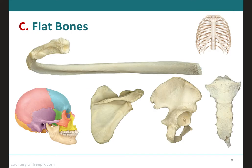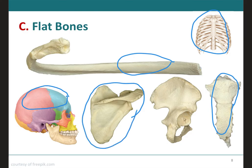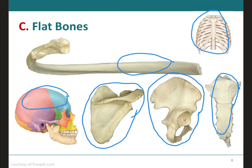Flat bones are generally thin and composed of two nearly parallel plates of compact bone enclosing a layer of spongy bone. They afford considerable protection and provide extensive areas for muscle attachment. They include the cranial bones, which protect the brain; the sternum or breastbone; the ribs, which protect the lungs and heart in the thorax; the scapula or shoulder blades; and the pelvic bone or os coxa. Note that even though the rib looks like a long bone, it has a thin layer of spongy bone between two parallel plates of compact bone, which is why it's classified as flat.